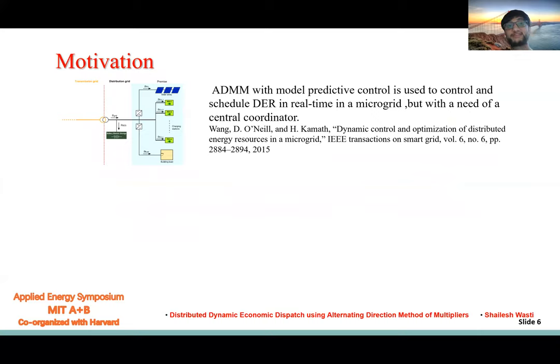ADMM has been extensively reported in literature for resource allocation problems. This paper solves dynamic economic dispatch to schedule DER with the need of a central coordinator, the point of common coupling.